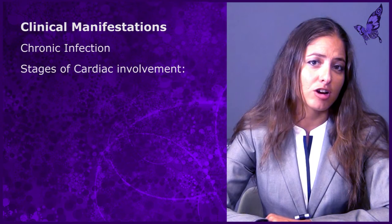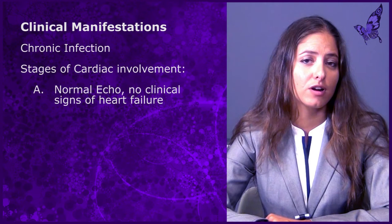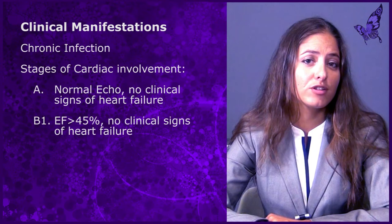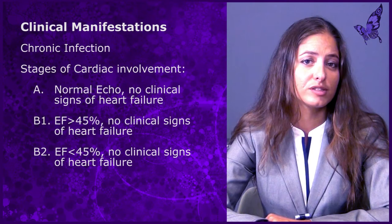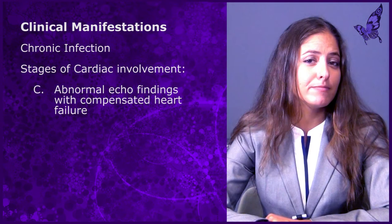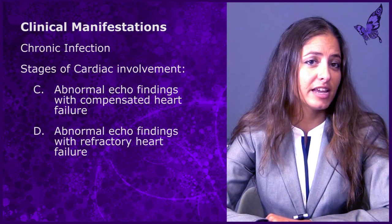Stage A will have a normal echo with no clinical signs of heart failure. Stage B1 will have an EF greater than 45%, also with no clinical signs of heart failure. Stage B2 will have an EF less than 45%, and again with no clinical signs of heart failure. Stage C is characterized by abnormal echo findings with compensated heart failure. Finally, Stage D is characterized by abnormal echo findings with refractory heart failure. Here are two examples of the dilated cardiomyopathy seen in Chagas disease on gross pathology and also on MRI.